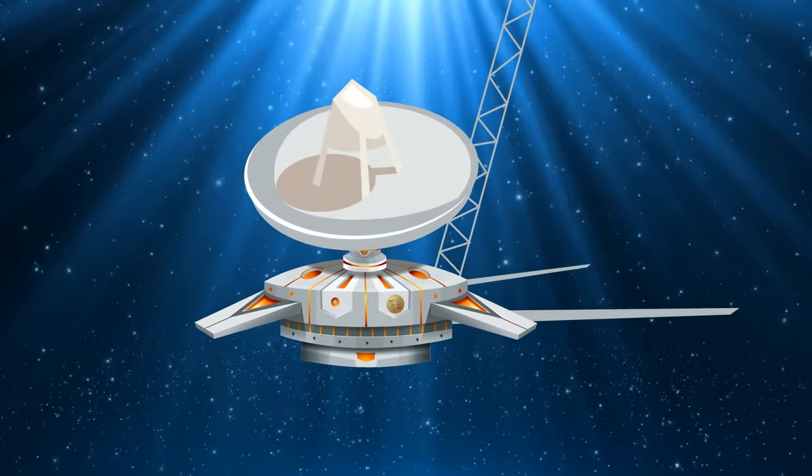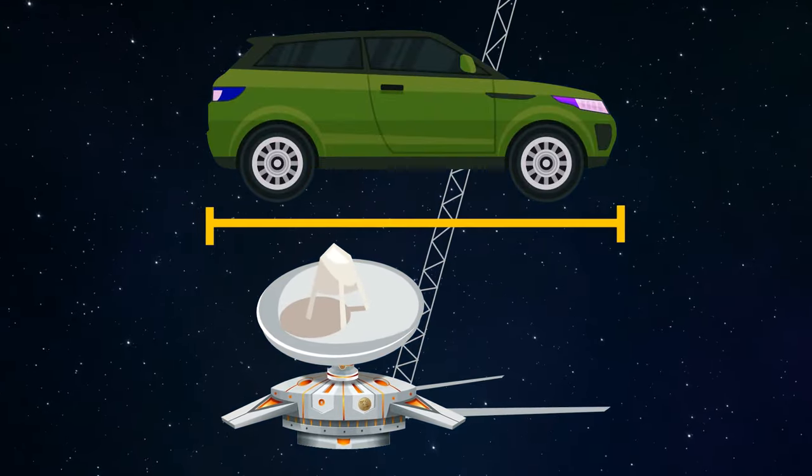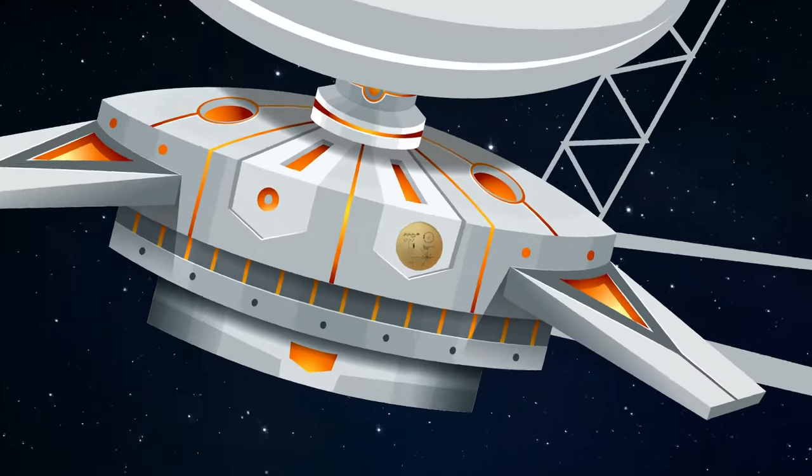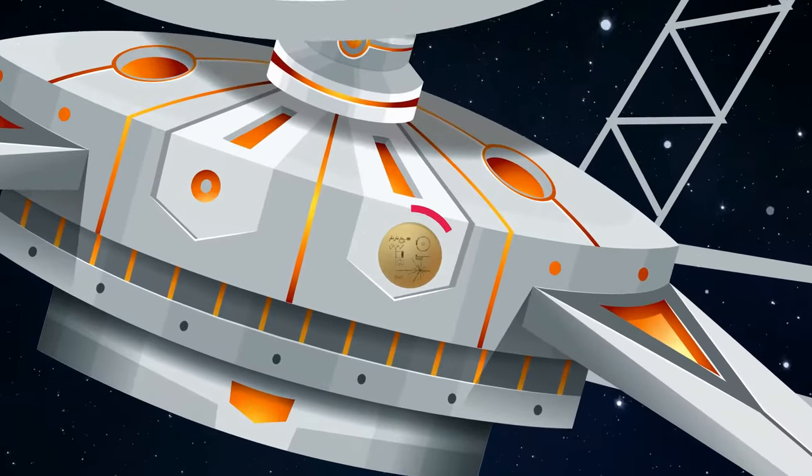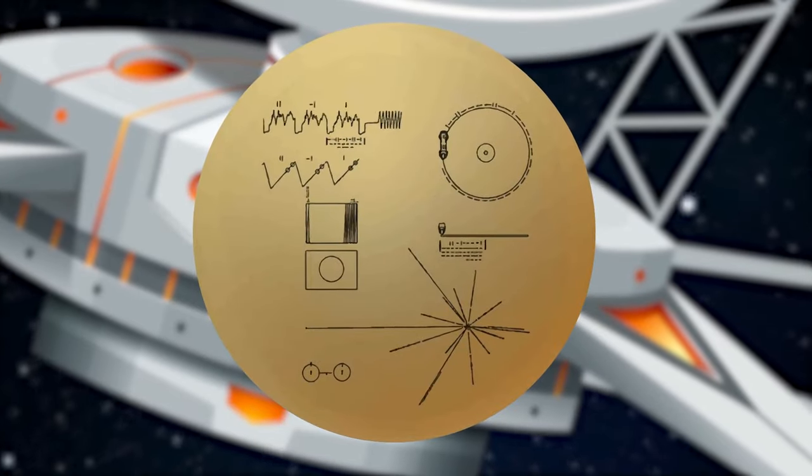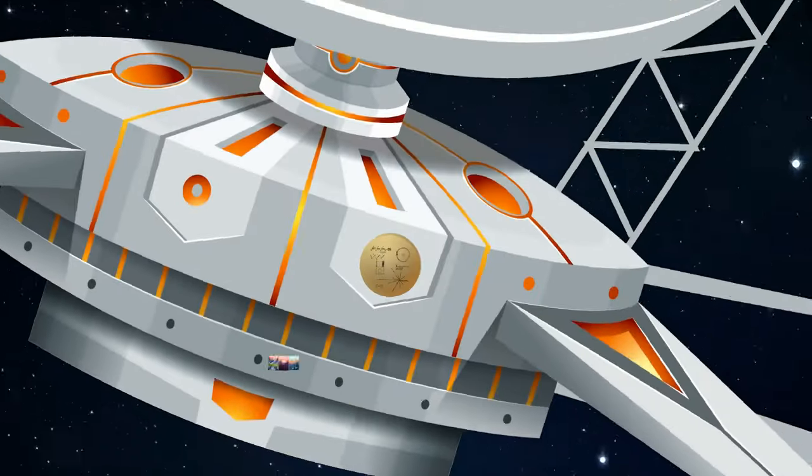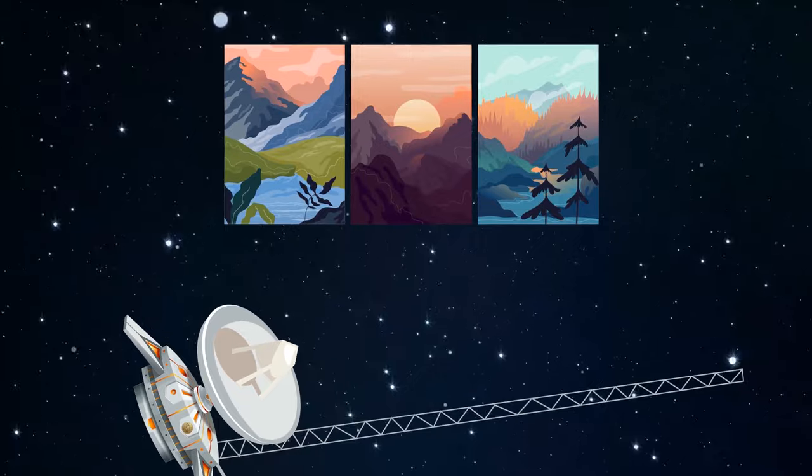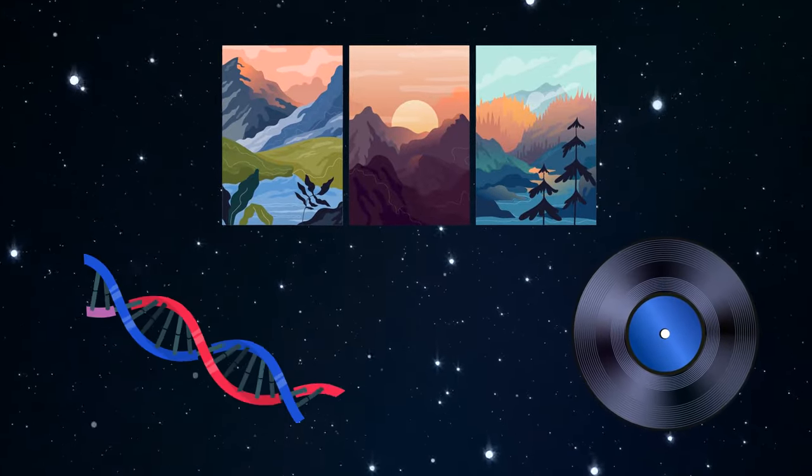And here it is. The probe is as long as a car and weighs like two motorcycles. You can see a gold plate on its hull. It's a message from people to potential civilizations out there. It has pictures of Earth's landscapes, recordings of human speech, and our DNA.